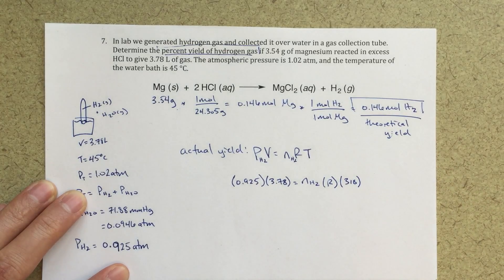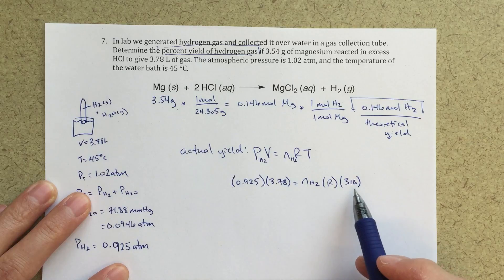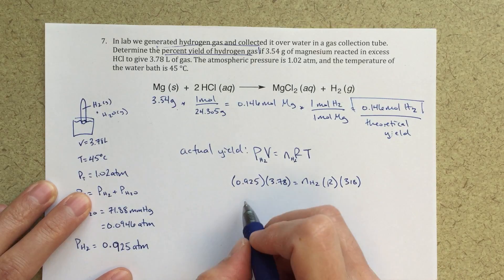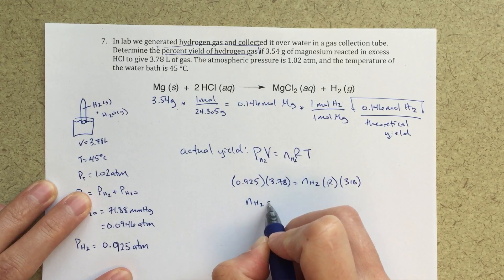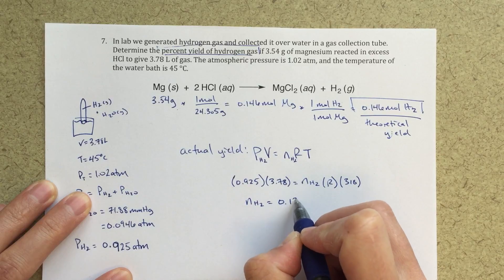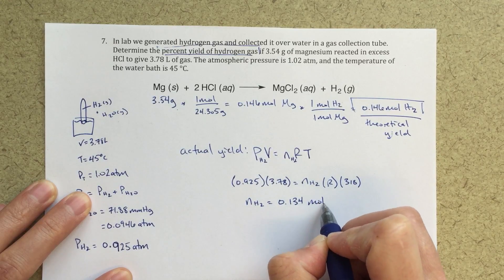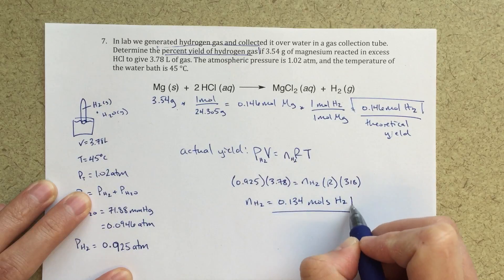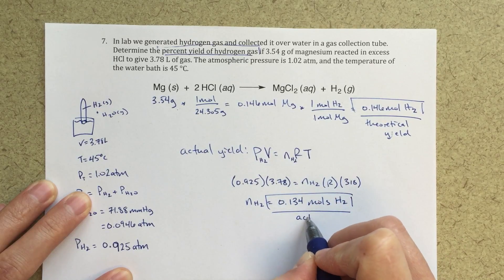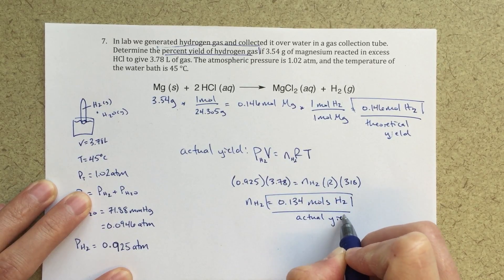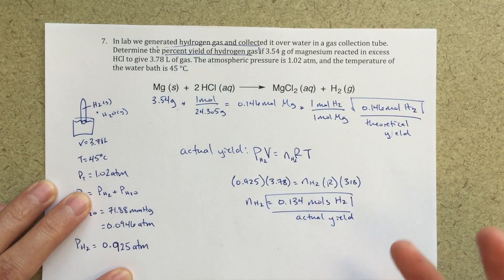So make sure we remember to convert to Kelvin there from 45 degrees plus 273 gives us 318. And then we can solve for nH2 is 0.134 moles of H2. So this is my actual yield. So that's how much I actually obtained.